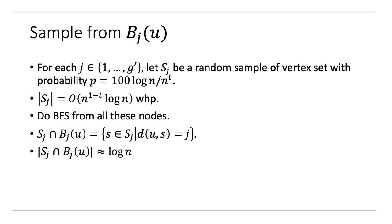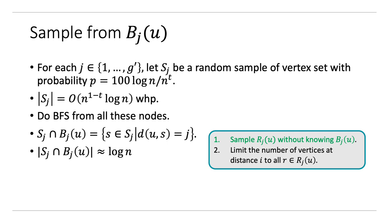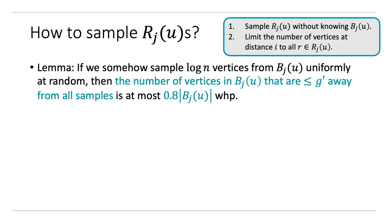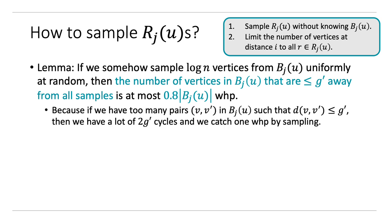For the second property, we have the following lemma: if we sample log N vertices from B_j of u uniformly at random, then the number of vertices in B_j of u that are at most g prime away from all these samples is at most 0.8 times the size of B_j of u — so a constant fraction of it. This is because if we have too many pairs v and v prime such that v is g prime-close to v prime, then we have a lot of cycles of length 2g prime, which we catch by the sampling argument at the beginning of our algorithm.